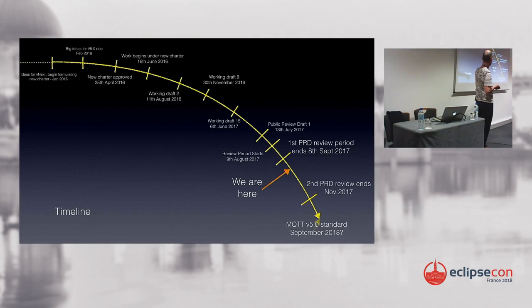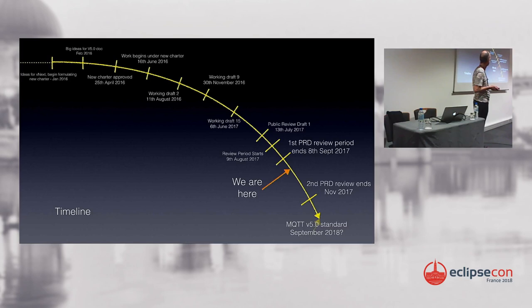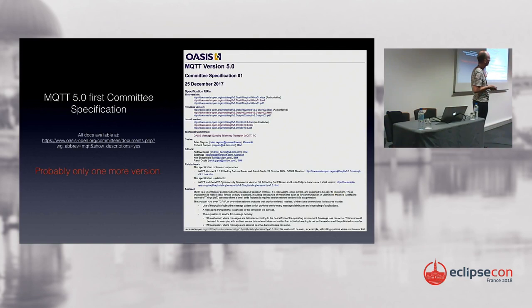We're almost at the end of the standardization process — there are a few final bits of red tape to be completed, but there should be no further substantive changes to the specification. If you were to implement MQTT version 5 now, there's no reason any of it should have to change before the final version is published. You can rely on it; no significant changes are going to be made.